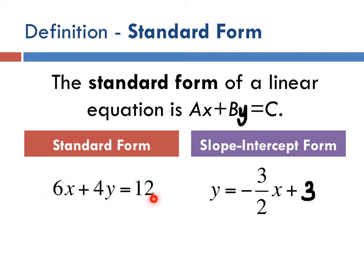Standard form is all over the place. It's the one we went over last week where you had to get y by itself. Let's say we want to go from standard to slope-intercept form. Subtract 6x from both sides, so you get 4y equals negative 6x plus 12.